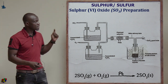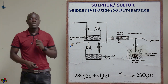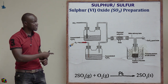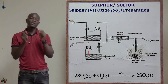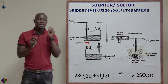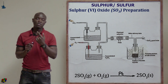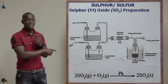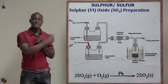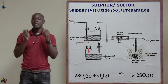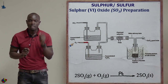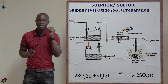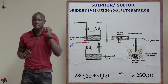As you can see in this experiment, we have sulfur 4 oxide being reacted with oxygen. The sulfur 4 oxide first enters the concentrated sulfuric acid, and the oxygen also first enters the concentrated sulfuric acid, before they are reacted in the presence of platinized asbestos catalyst.